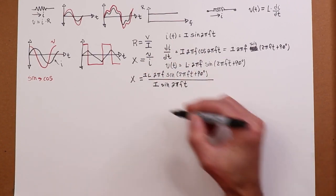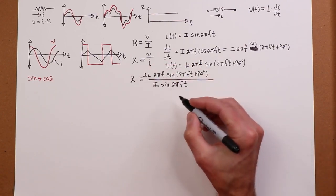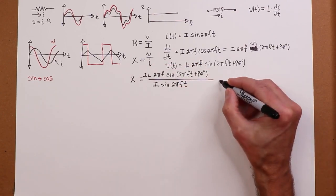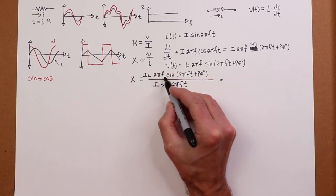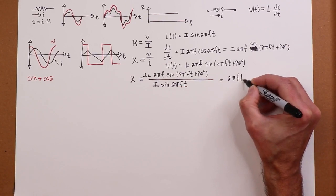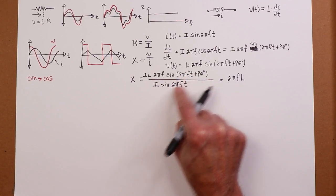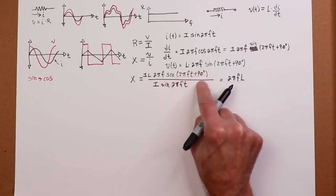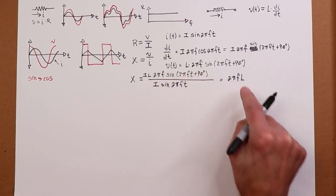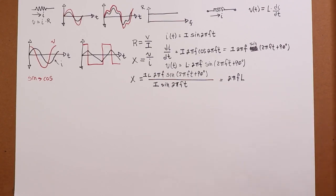Anyway, my value of current here is I times the sine of 2 pi Ft. Let's simplify this. Well, hey. Those I's cancel out. Good thing I remembered. And what we wind up with is a value of 2 pi F L. And then these signs? These are the same values. Sine of 2 pi Ft, 2 pi Ft, except this has 90 degrees attached to it. So, you can say that X is 2 pi F L at 90 degrees.